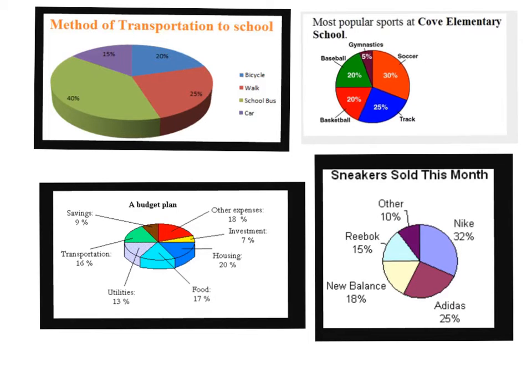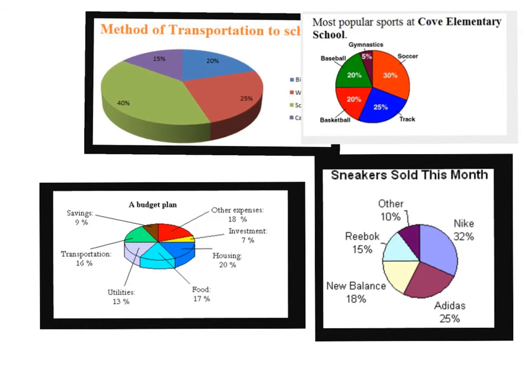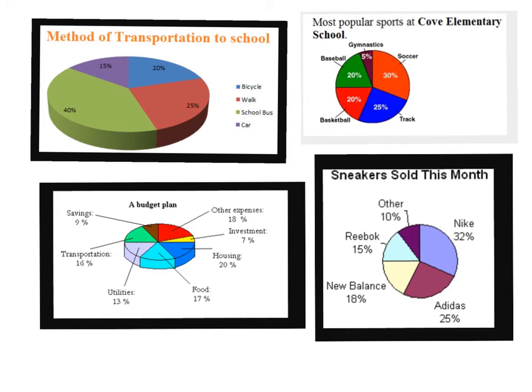Down here somebody has a budget plan showing nine percent of their salary goes to savings, and how much they spend on transportation, utilities, food, all that kind of stuff. And then sneakers sold this month at a store - 32% were Nike, 25% Adidas. So circle graphs can be used to show a percentage of a whole. For the transportation example, it shows 20% of the total population surveyed chose biking. Circle graphs can show different percentages or different parts.